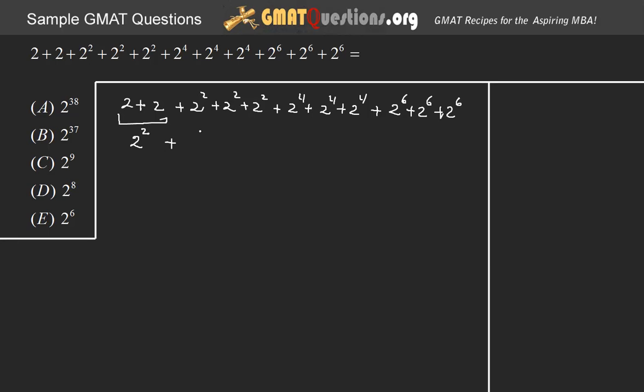Now, having said that, we have 3 of these, 2 squared. So, just let's write right now, plus 3 times 2 squared. There are 3 of them.